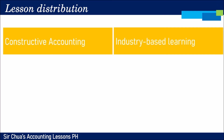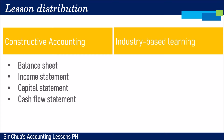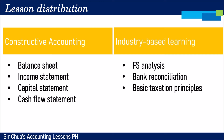The lesson distribution for Fundamentals of ABM Part 2 covers Constructive Accounting and Industry-Based Learning. In Constructive Accounting, you will learn how to properly prepare a balance sheet, income statement, capital statement, and cash flow statement — the four basic financial statements from FABM1 — but we will be deepening and expanding your knowledge in preparing these statements. We will also cover industry-based learning including financial statements analysis, bank transactions, bank reconciliation statement, and basic taxation principles.